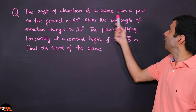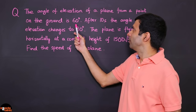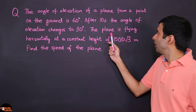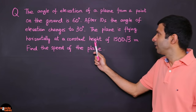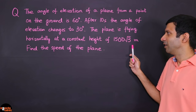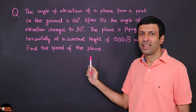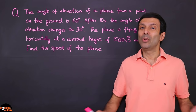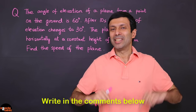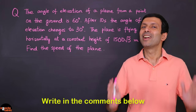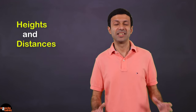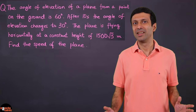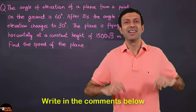The angle of elevation of a plane from a point on the ground is 60°. After 10 seconds, the angle of elevation changes to 30°. The plane is flying horizontally at a constant height of 1500√3 meters. Find the speed of the plane. I'm not going to solve this question — I want you to try it yourself and let me know your answer in the comments below!